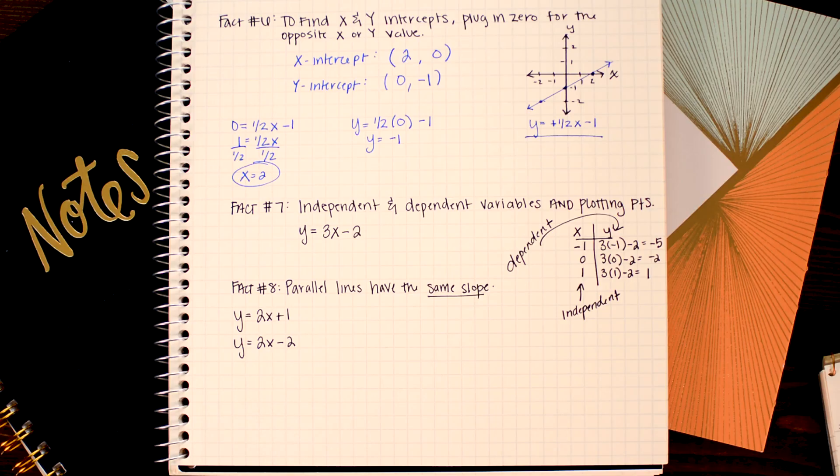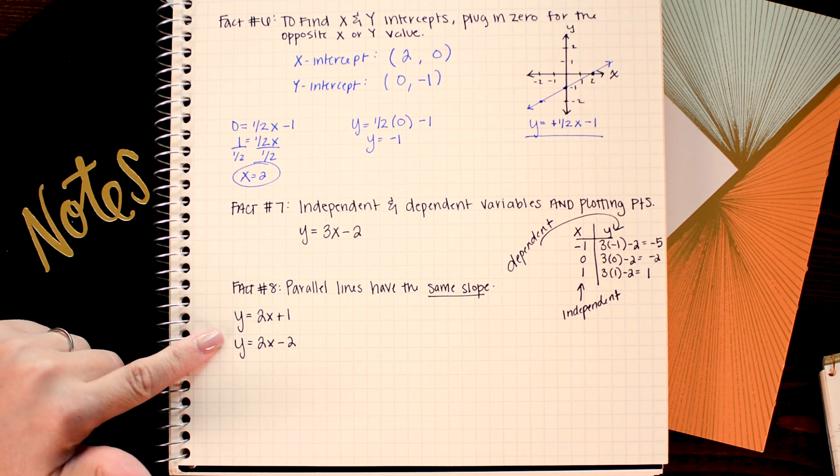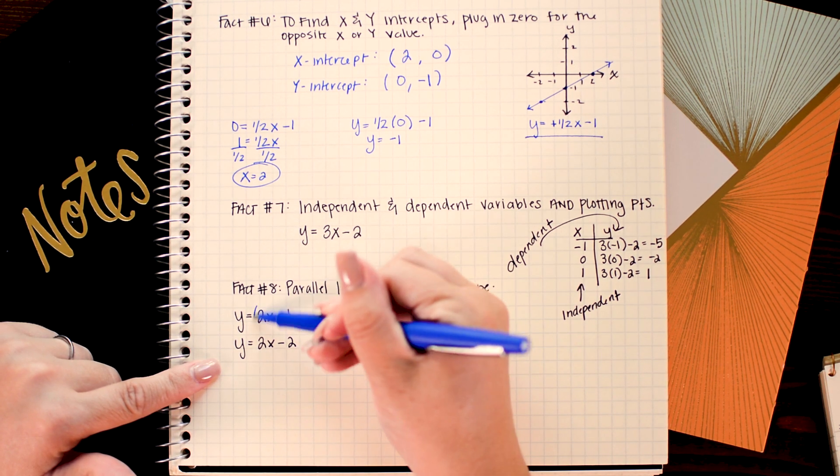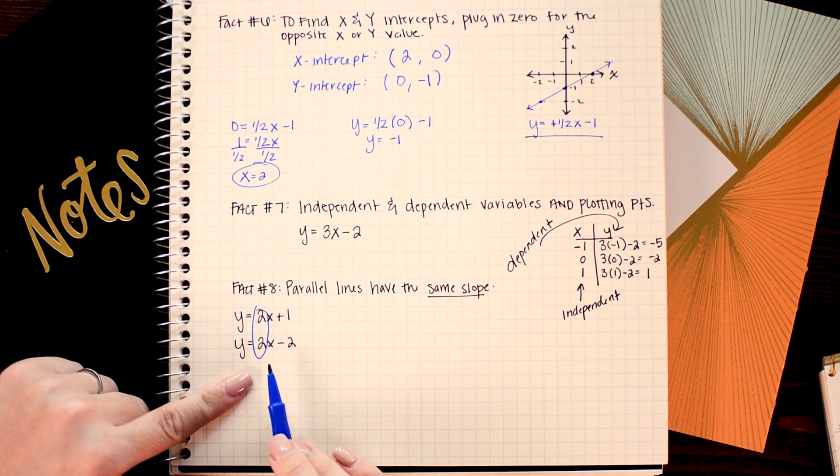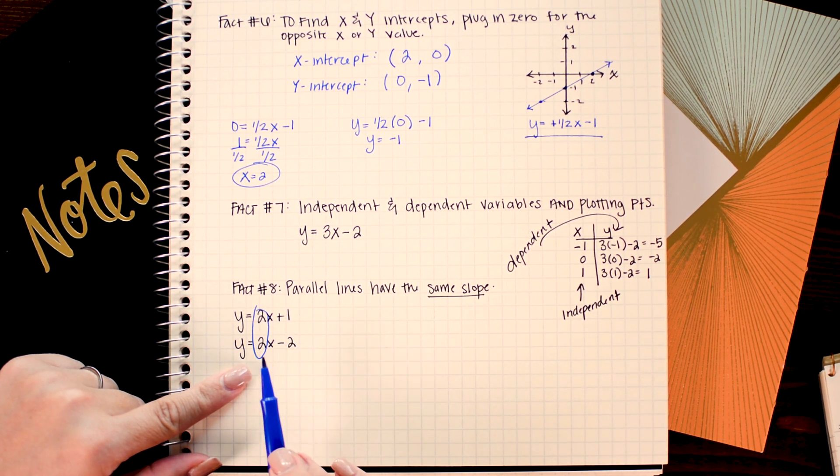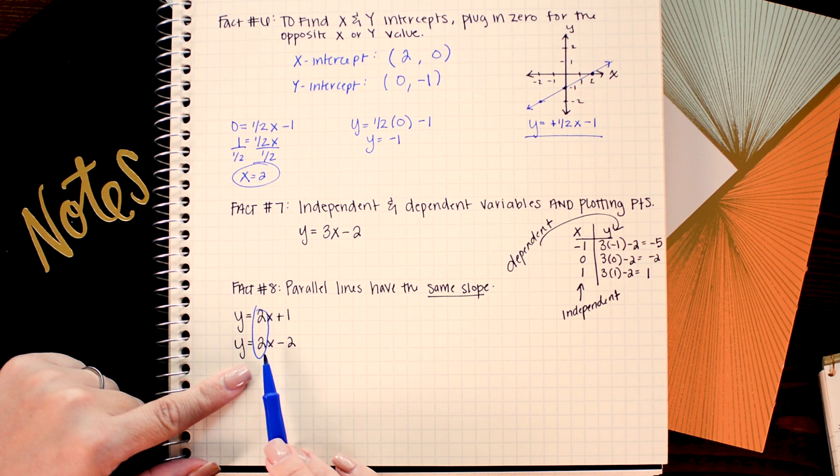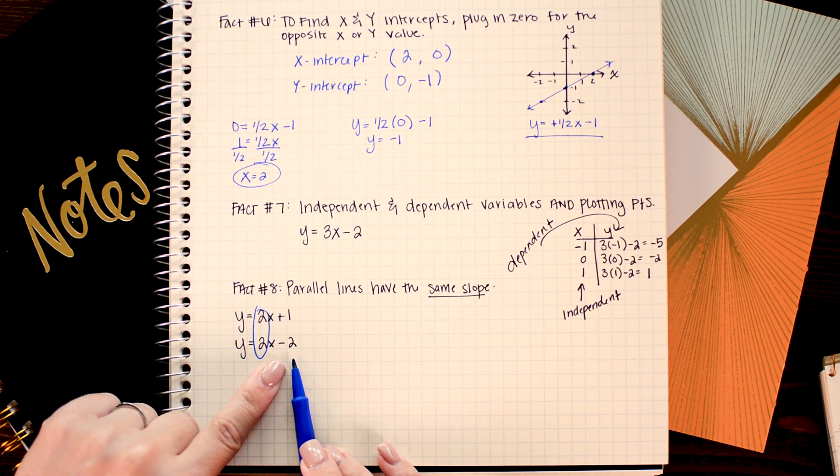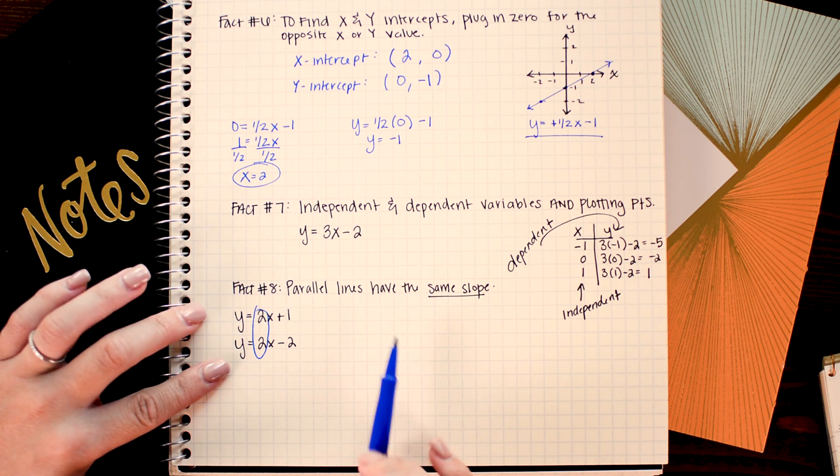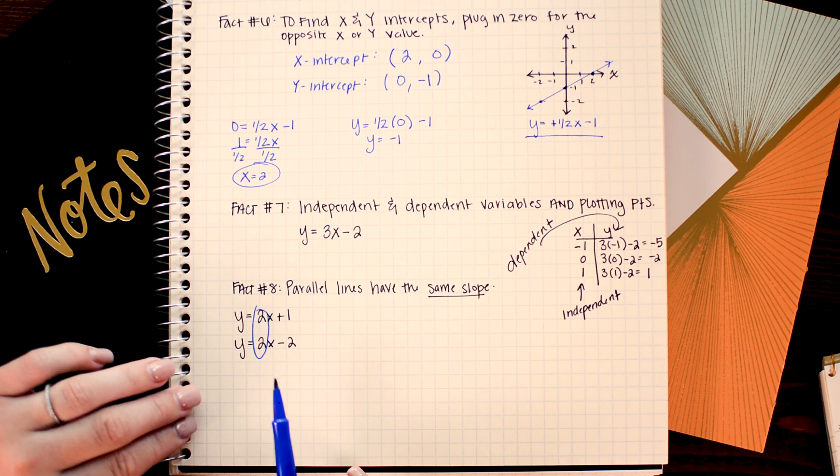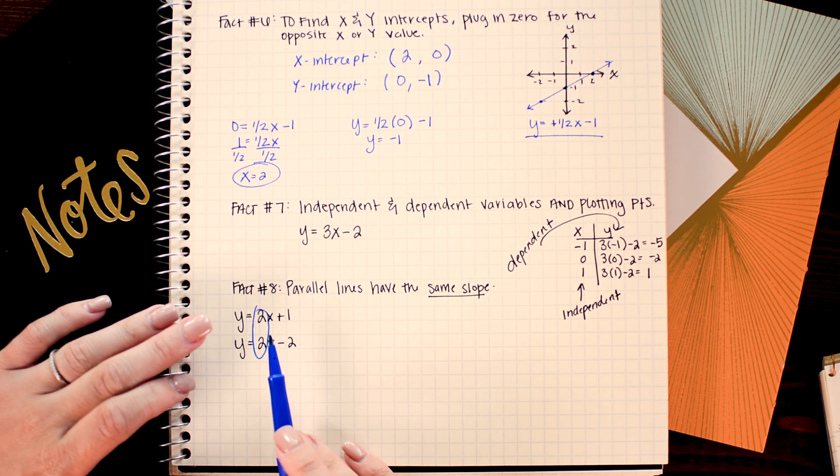Parallel lines always always always have the same slope. If you're looking at these two lines in y equals mx plus b form remember that the coefficient on x is the slope and because these are the same we know that the lines are parallel. What that means is that these two lines never cross because they're going in the exact same direction. The only difference between the lines is that they cross the y-axis in different places. So if you ever need to construct a parallel line to another you'll want to make sure that the slope of your new line is the same as the slope of your original line.